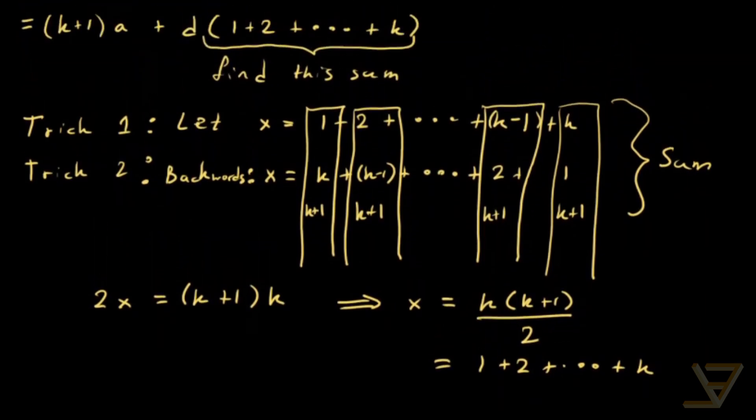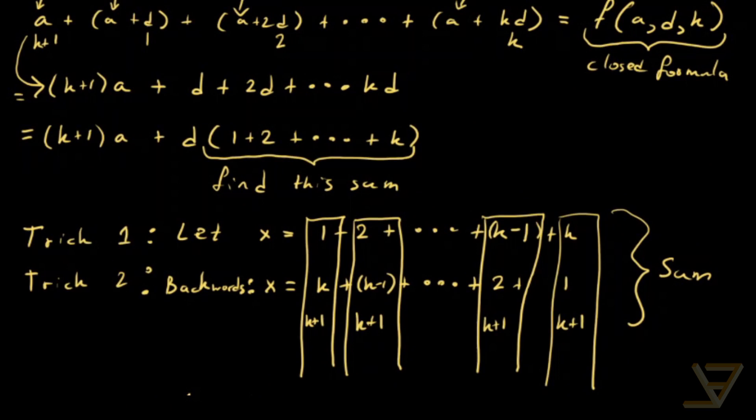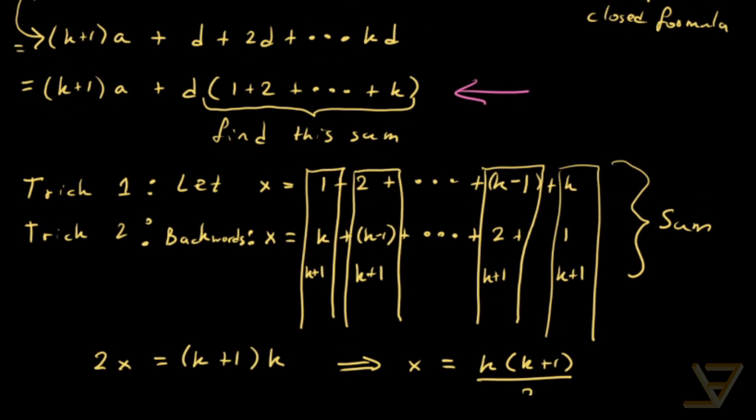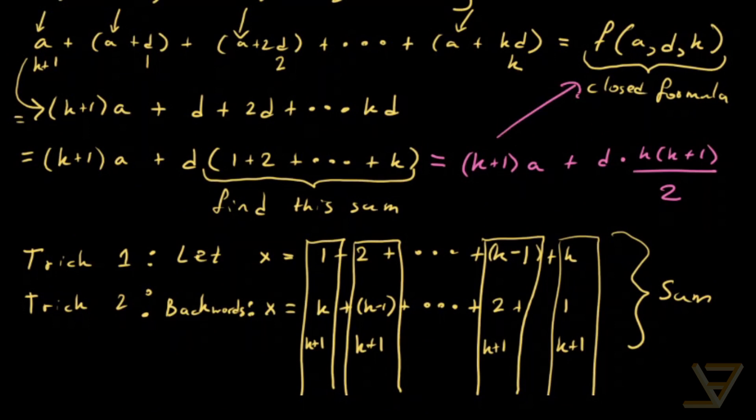Now we can combine it with our earlier formula, which is this over here. We can write it as the following: K plus 1 times A plus D times K times K plus 1 over 2. And that's the closed formula that we were looking for over here. So great, we have a closed formula for the sum of the terms of an arithmetic series in terms of the initial term and the common difference and the number of terms.